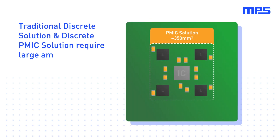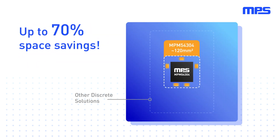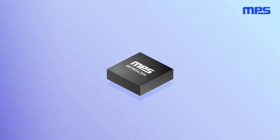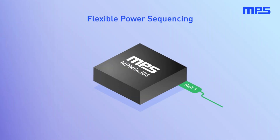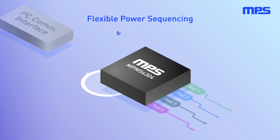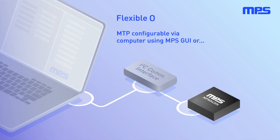Using the MPM54304 greatly reduces solution size, making it up to four times smaller than discrete solutions and up to two times smaller than pMix solutions currently on the market. This results in up to 70% space savings compared to traditional solutions. The MPM54304 also features flexible power on/off sequencing for each channel.